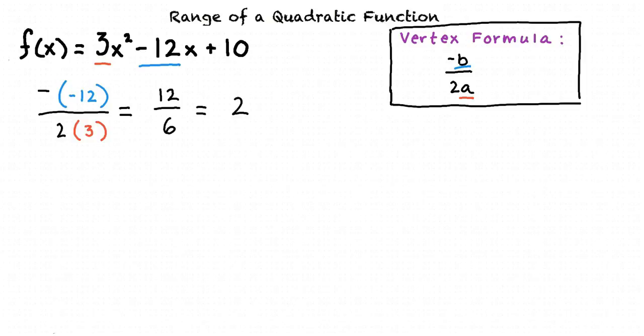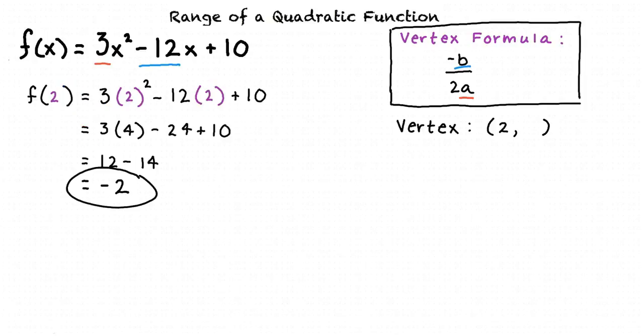This tells us that the vertex of our quadratic will occur at the x value of 2. We can find the y value where the vertex is located by plugging in 2 for the x values in the function. This results in f of x equals negative 2. So we now know that the vertex occurs at the point 2 comma negative 2.